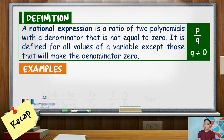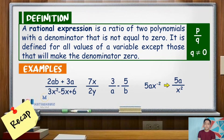Recall that a rational expression is a ratio of two polynomials with a denominator that is not equal to zero. It is defined for all values of a variable except those that will make the denominator equal to zero. In symbol, this can be written as P over Q, where Q should not be equal to zero.